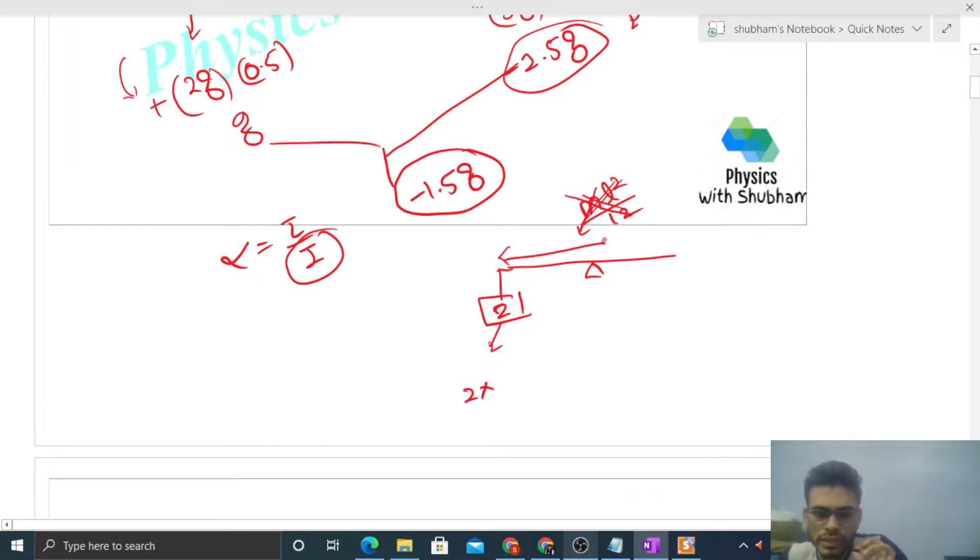Similarly here, 5 kg, so 5 into its perpendicular distance 0.5 squared. If we sum it, it is 7 by 4. This is the value of moment of inertia.